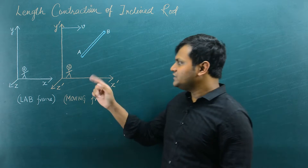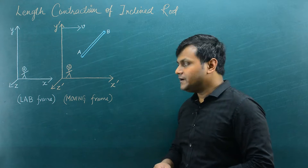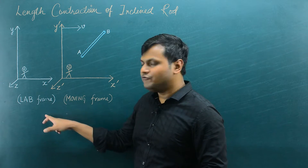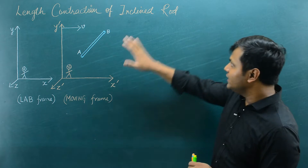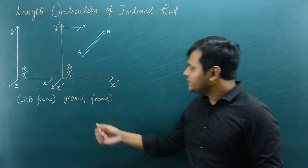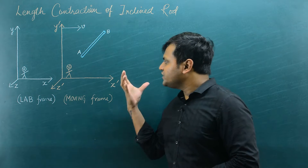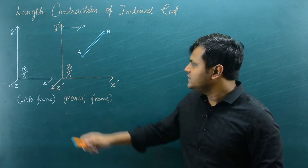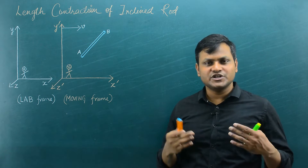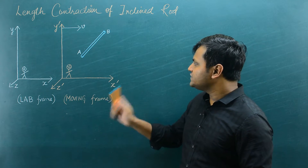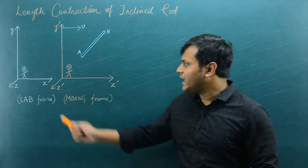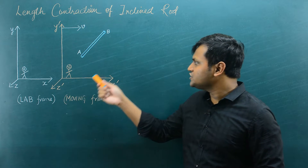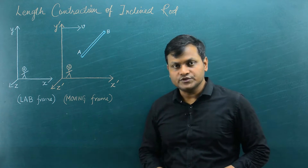For that, I have this particular setup here. In this setup, I have two observers. One is an observer in a lab frame, which I am considering to be at rest with respect to the board. Another is an observer in the moving frame, which is in relative motion with respect to the lab frame. I have associated Cartesian coordinate reference frames with them: x, y, z and x dash, y dash, z dash corresponding to both observers.